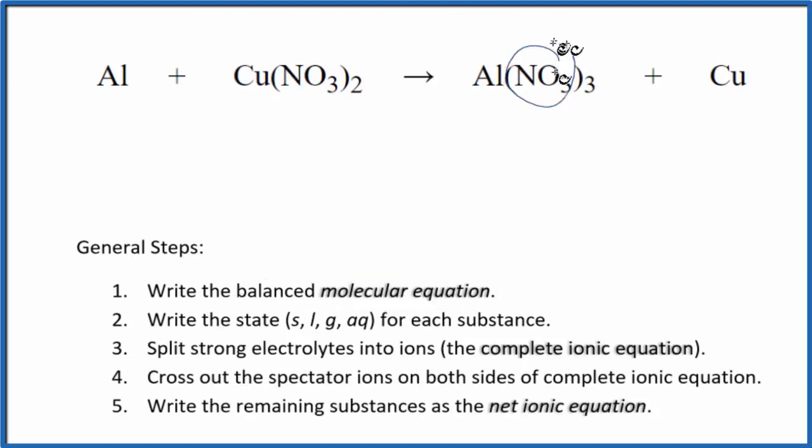I can see I have 3 nitrate ions here and 2 here. So I think I want to double the aluminum nitrate. Now I have 2 times the 3 nitrates. That gives me 6. So if I put a 3 here, 2 nitrates times 3. Those are balanced. 3 coppers, put a 3 here. 2 aluminum atoms, put a 2 there. This equation is balanced.